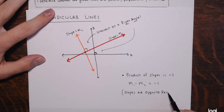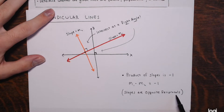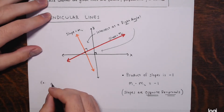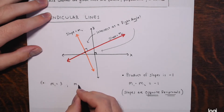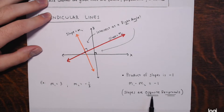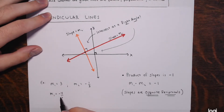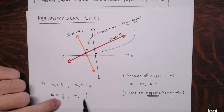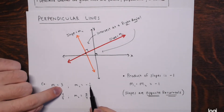Reciprocals multiply to give positive 1; opposite reciprocals are numbers that multiply to give negative 1. For example, if m1 were 3, then m2 would be negative 1/3 — take the reciprocal and then the opposite. Another example: if m1 were negative 4/5, then the opposite reciprocal would be positive 5/4. If you multiply them, you get negative 1. Negative 4/5 times 5/4 is negative 1; 3 times negative 1/3 is negative 1.